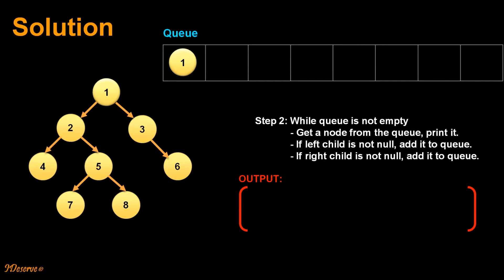We move on to step 2 where we first check whether the queue is empty or not. It is not empty. So we get a node from the queue and we print it. So node 1 gets printed. After that we move on to next step where we add left child so 2 gets added to the queue and in next step 3 gets added to the queue.